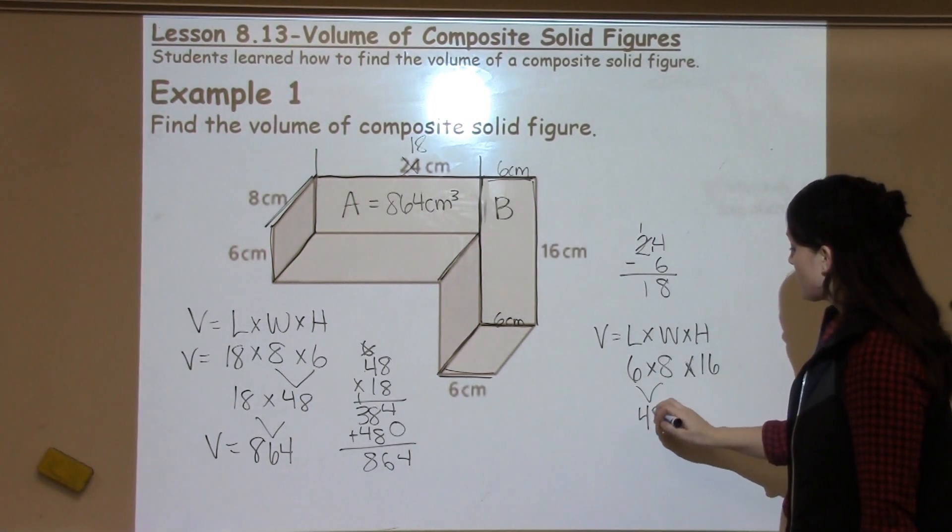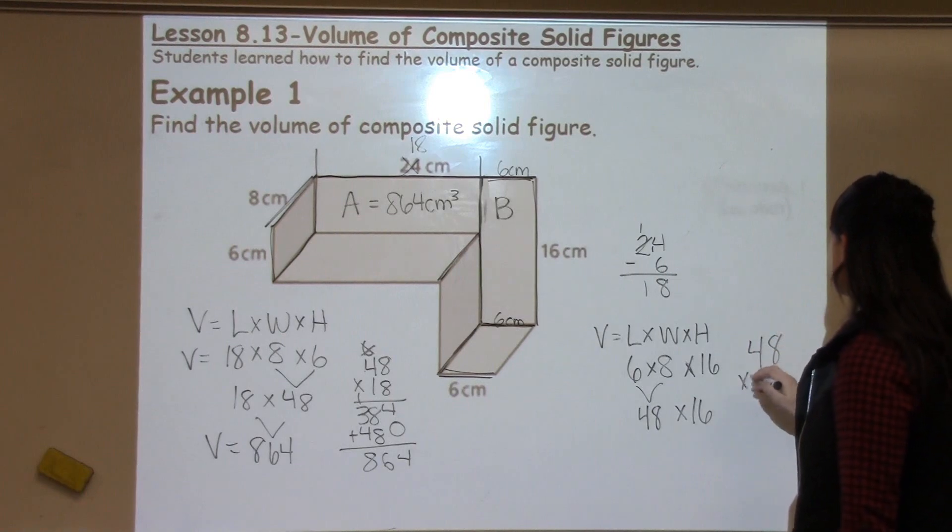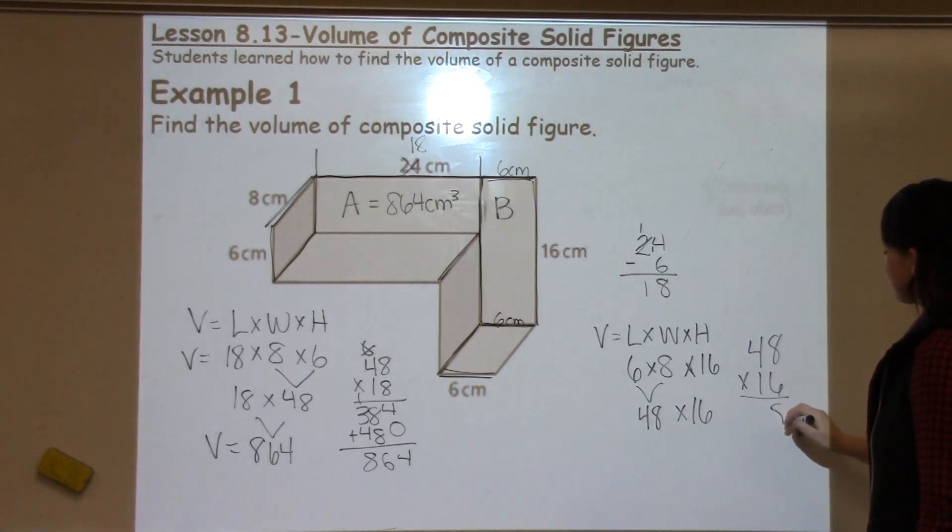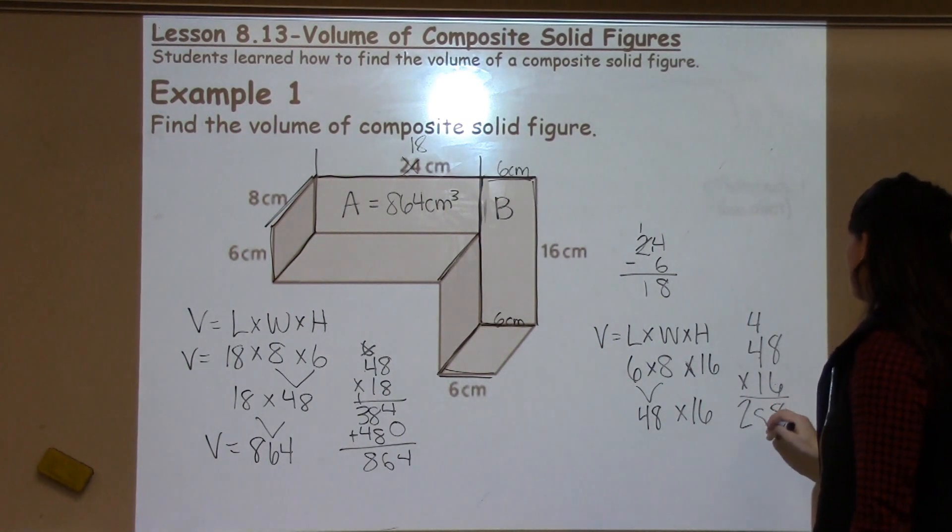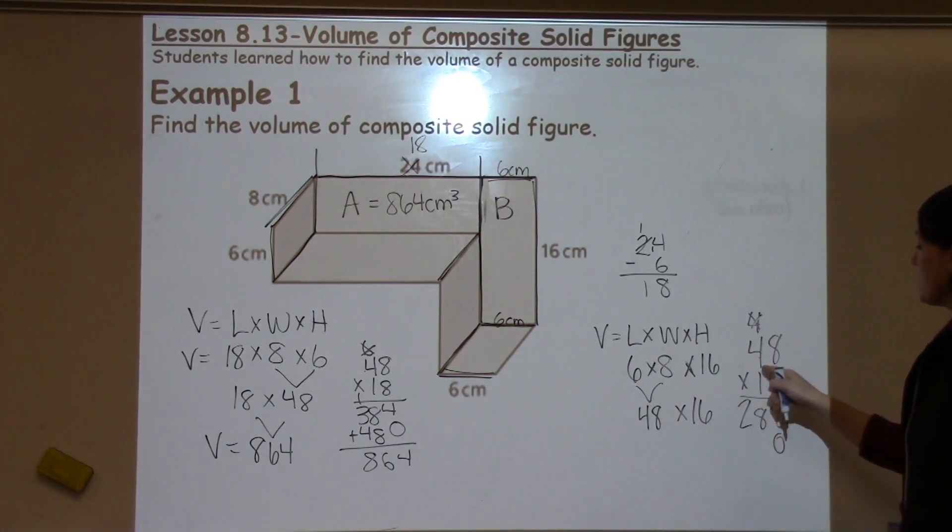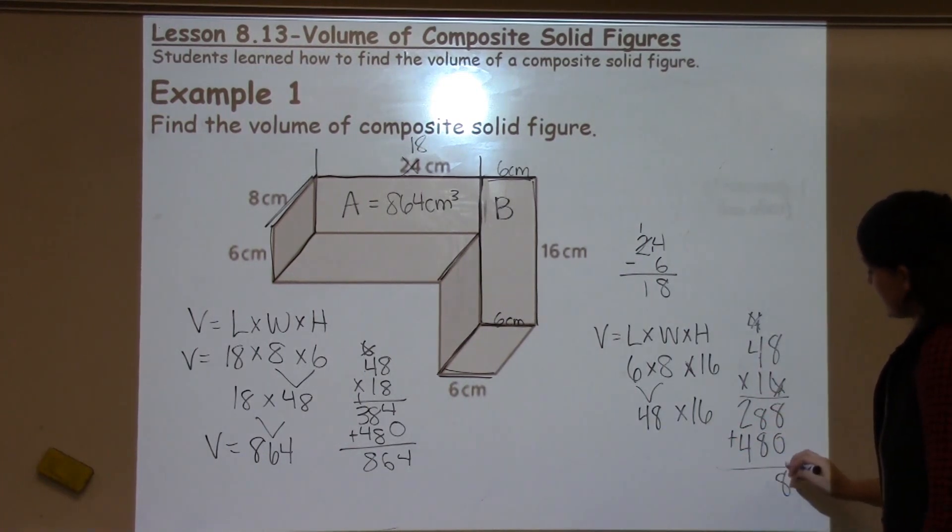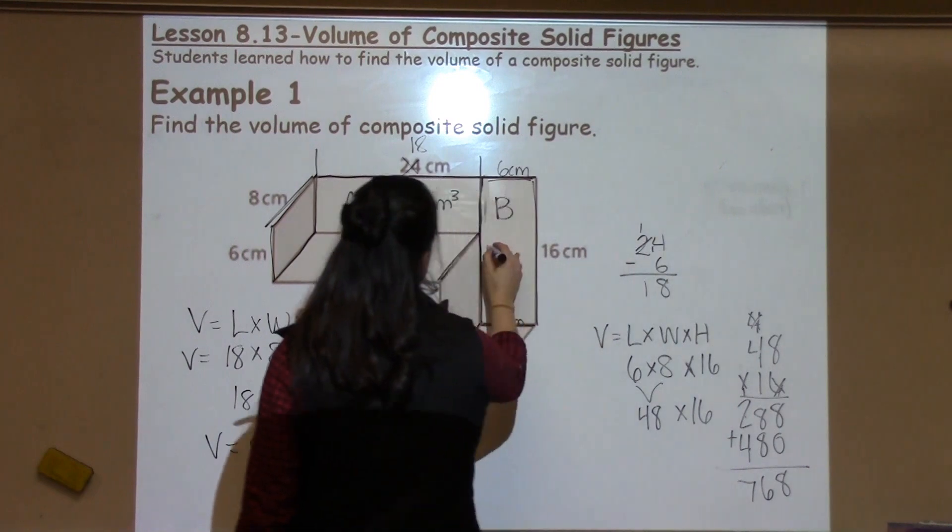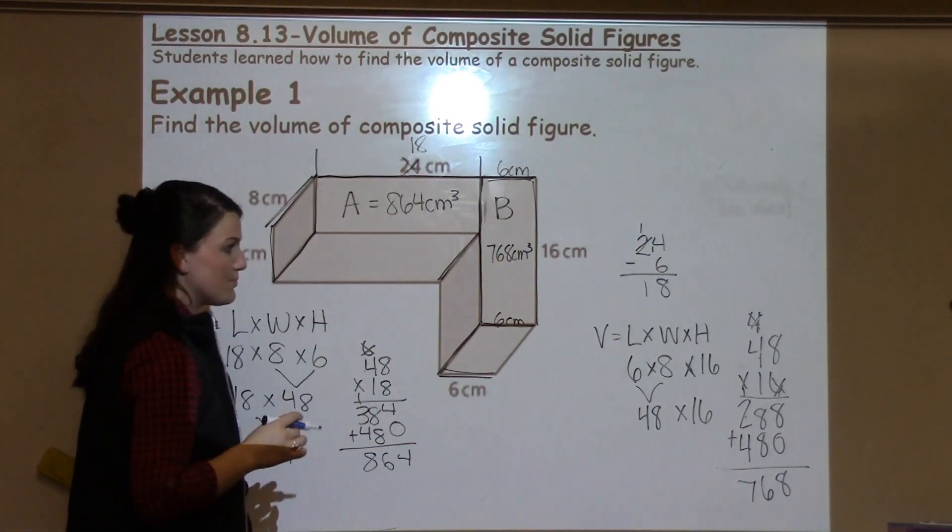Six times eight is 48. Now I need to take 48 times 16. Six times eight is 48 again. Six times four is 24, plus four is 28. I'm done with my six, so I get rid of the four and add a zero. One times eight is eight. One times four is four. Then I can add, just like I normally would, to get the final answer of 768 centimeters cubed for shape B.